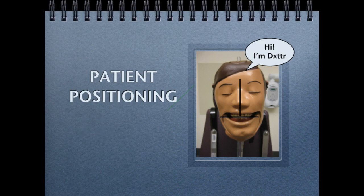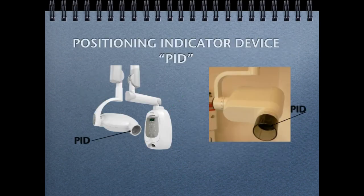We want our patient to be still. When you're experienced, you figure out how to work with patients who may be squirming or unable to position their head in the ideal position. We will of course be using our PID — our positioning indicator device — in order to obtain our image.